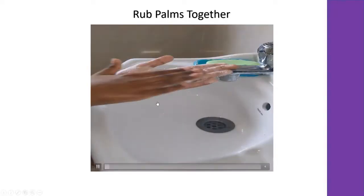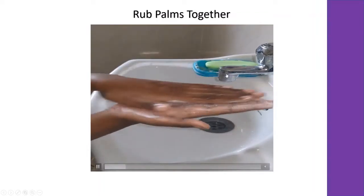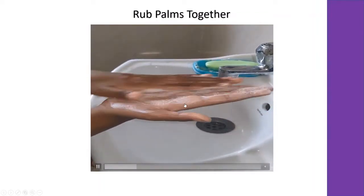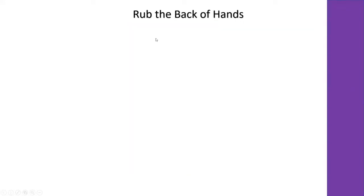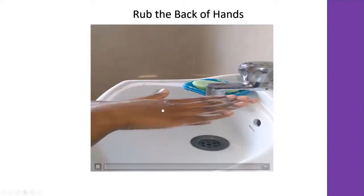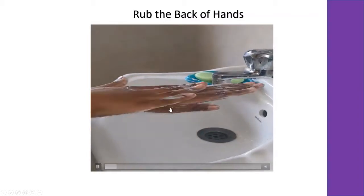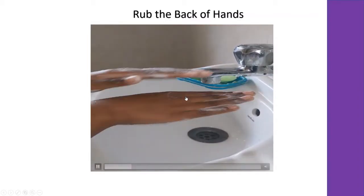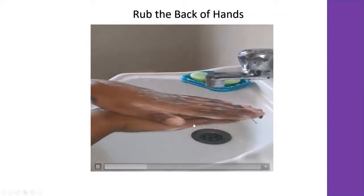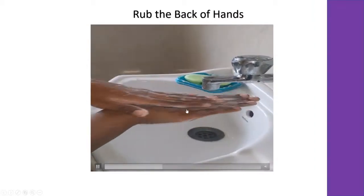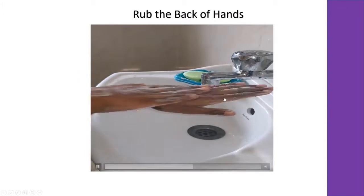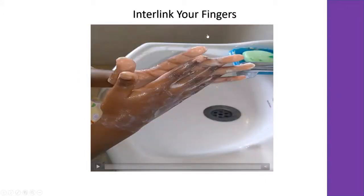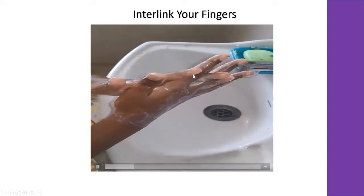Apply the soap and water, then rub the palms of both hands together. The next step is to rub the back of the hands. As shown in the picture, apply soap and rub the back of both hands. Another step is to interlink your fingers — like this, interlinked fingers — and rub.